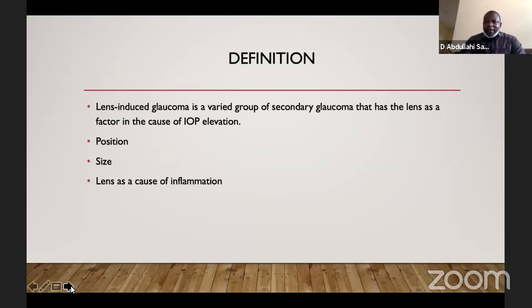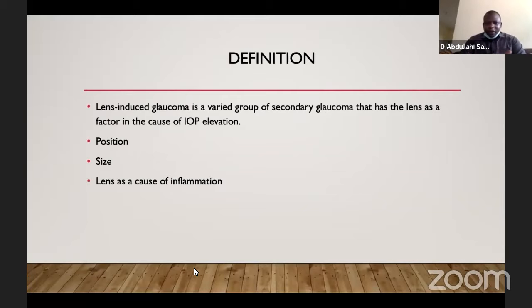I will start by defining what is lens-induced glaucoma. This glaucoma is a group of secondary glaucoma that has the lens as the cause of intraocular pressure elevation. This has been either because of the position of the lens — as in the case of phacomorphic cataracts when the lens is swollen — or if the lens is subluxated into the anterior chamber, causing mechanical secondary pupillary block, or due to inflammation when lens material is released into the anterior chamber causing subsequent elevation of intraocular pressure.